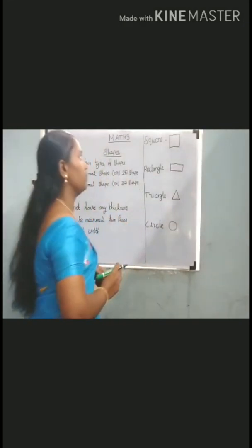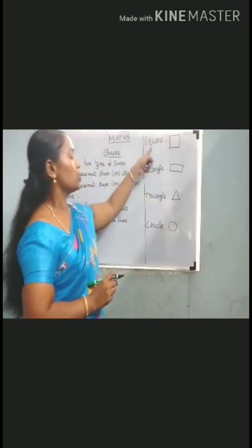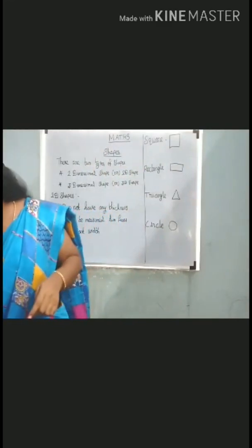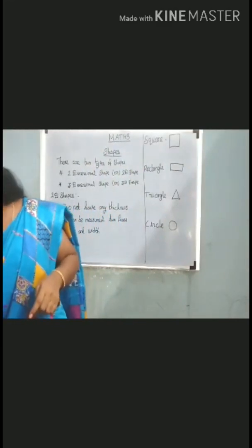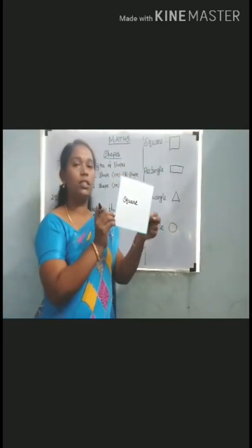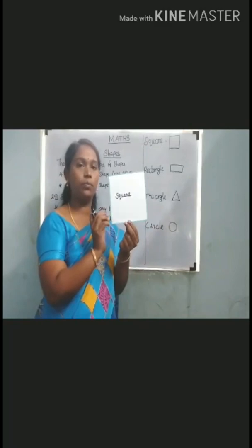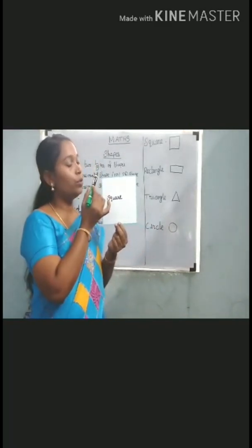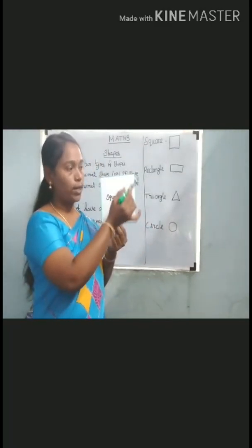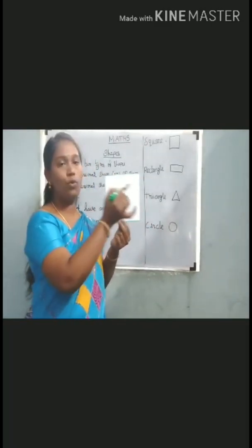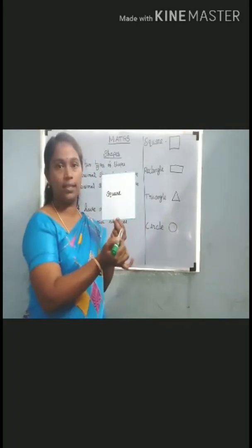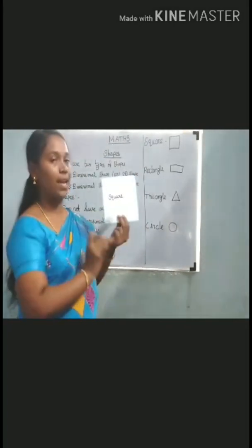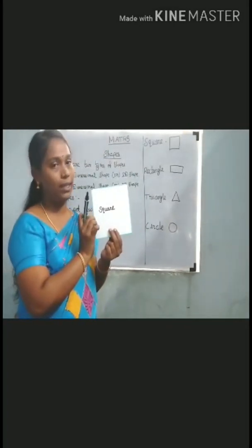See, this is a square shape. A square has 4 corners and 4 sides. All the sides are equal.